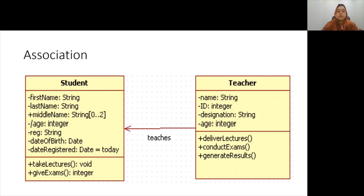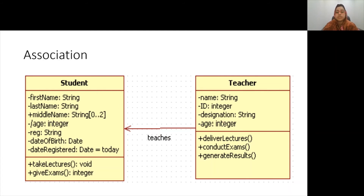An object-oriented system is built from class types that collaborate by passing messages and receiving responses. When instances of one class pass messages to instances of another class, an association is implied between these two classes. UML shows an association between two classes with a solid line. The association can be labeled with a name to indicate its nature — for example, 'teaches.' An arrowhead on the association name indicates the reading direction; in this case, we read it as 'teacher teaches students,' not 'student teaches teacher.'